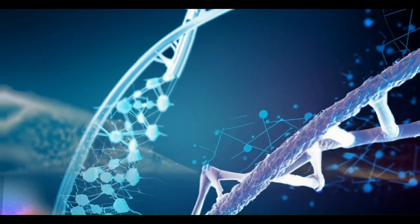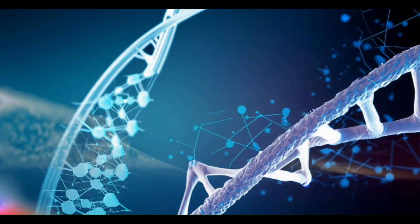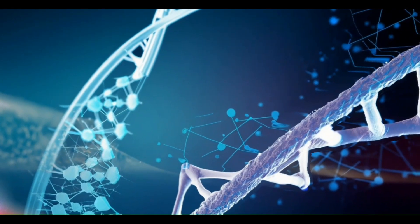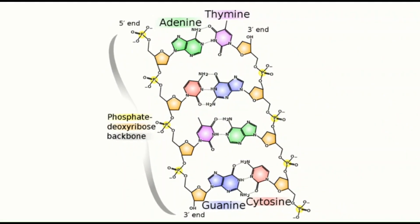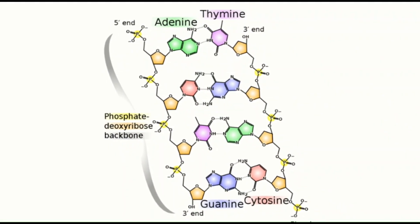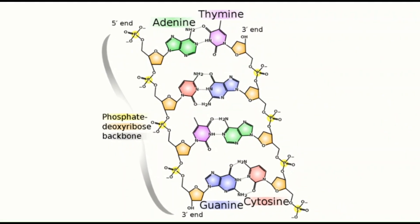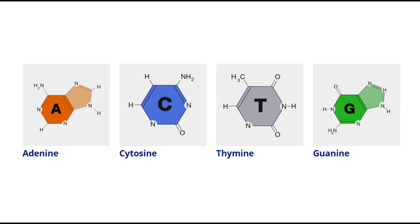Each strand has a backbone made of alternating sugar, deoxyribose, and phosphate groups. Attached to each sugar is one of four bases: adenine (A), cytosine (C), guanine (G), or thymine (T).